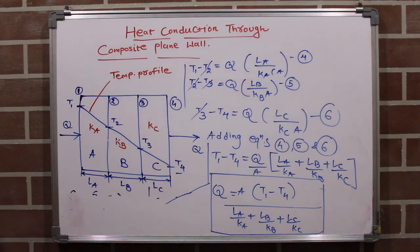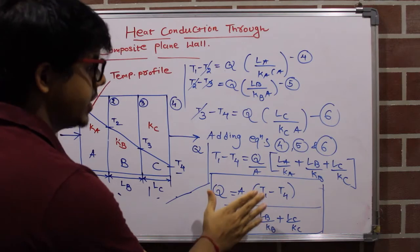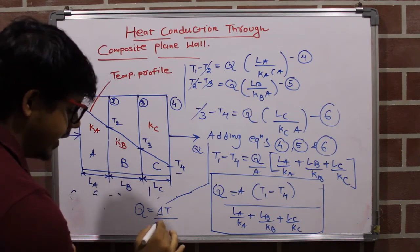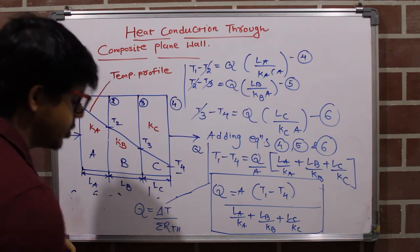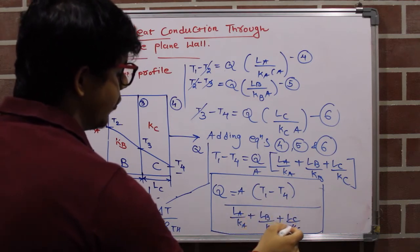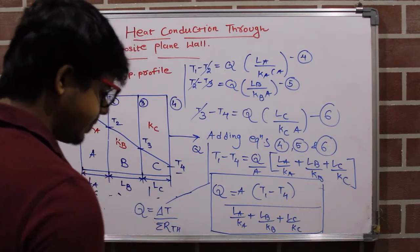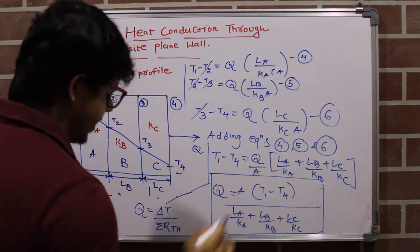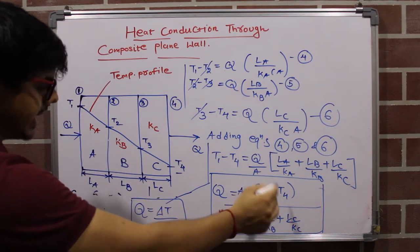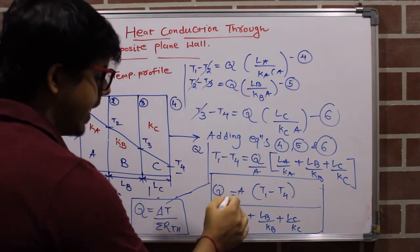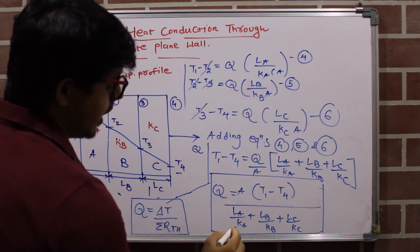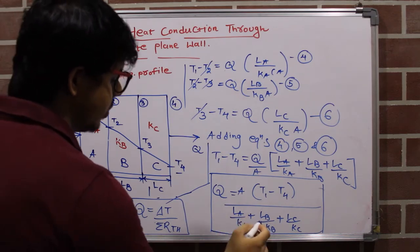This equation is also in the form Q = ΔT / ΣRth. Instead of a single Rth we write the summation ΣRth because La/(Ka·A) is Rth_A, Lb/(Kb·A) is Rth_B, and Lc/(Kc·A) is Rth_C, so the total resistance is Rth_A + Rth_B + Rth_C. Dividing numerator and denominator by A confirms this. So for composite walls, Q = ΔT / ΣRth.